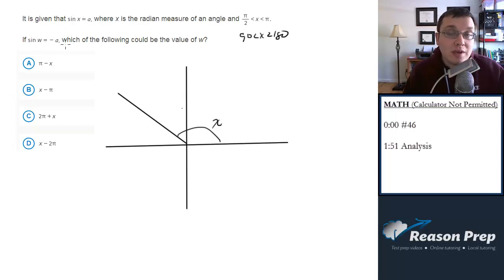When we take the sine of w, we get negative a. So what does that mean? It means it's the same angle, the same reference angle, as this one. So this is the reference angle here, call it theta. It's the same angle here, except it's got to be in a quadrant where sine is negative.